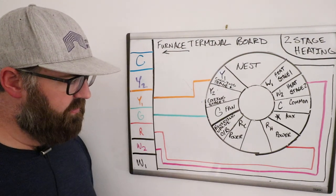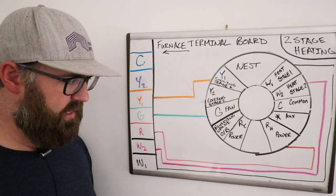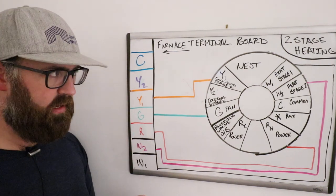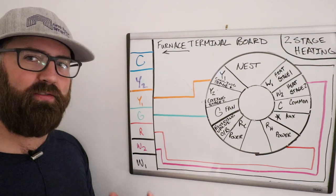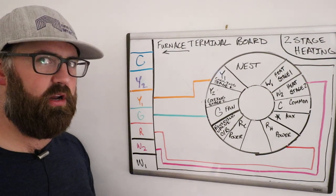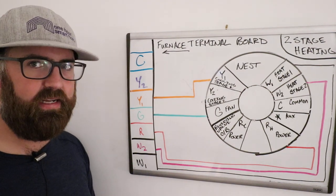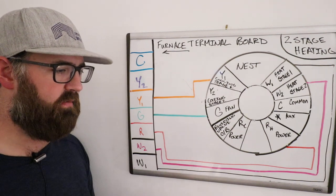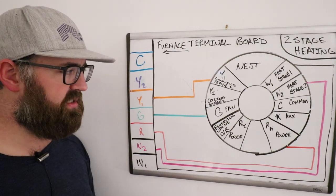The other one is down here, the reversing valve, O and B. And basically, that's a valve for heat pumps. Typically, if you have two-stage heating and cooling, you're not going to have a heat pump. You're going to have a gas-fired furnace or propane-fired furnace. So I'm going to skip that for this video.